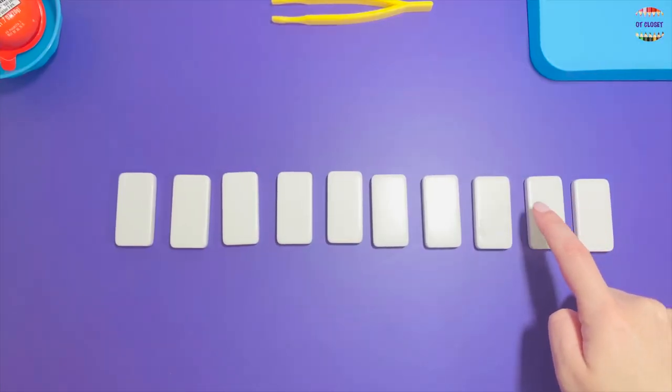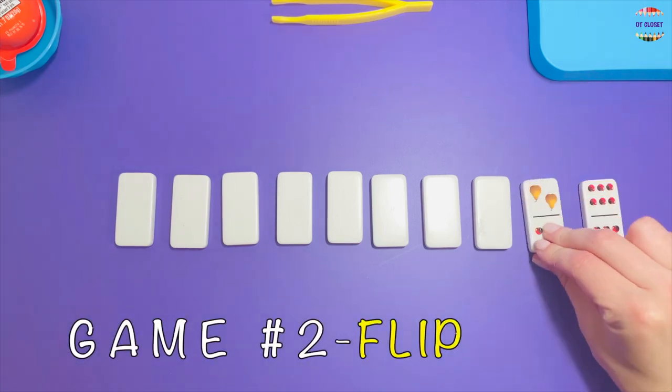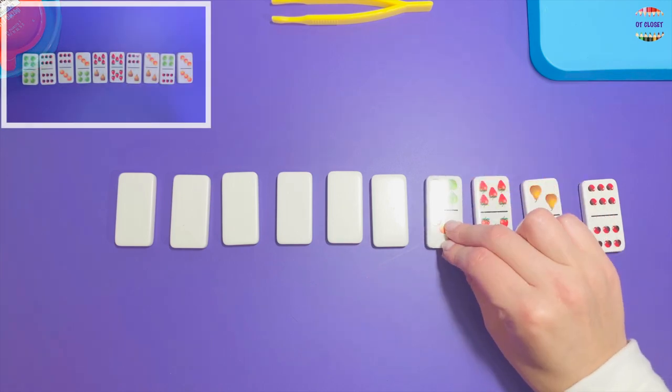Make sure you have spaces in between. Game number two: use your right hand to flip the dominoes so you could see the pictures.